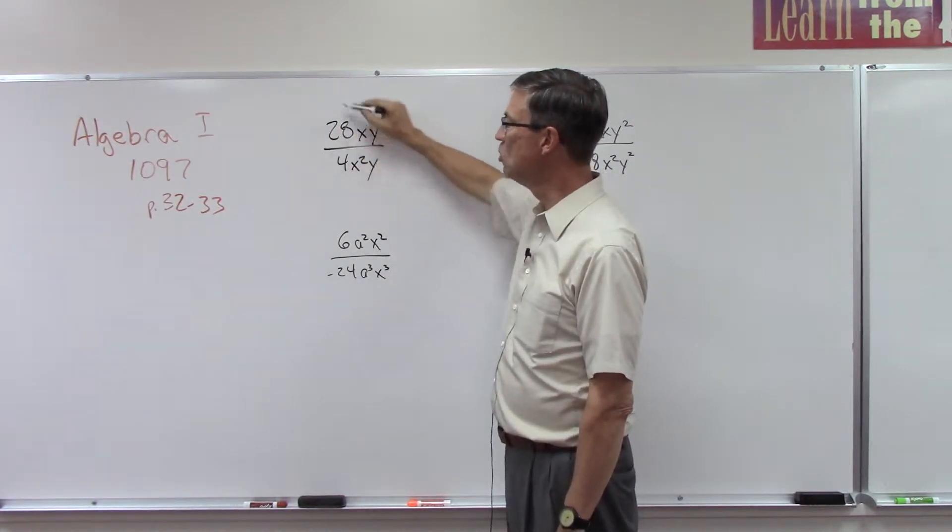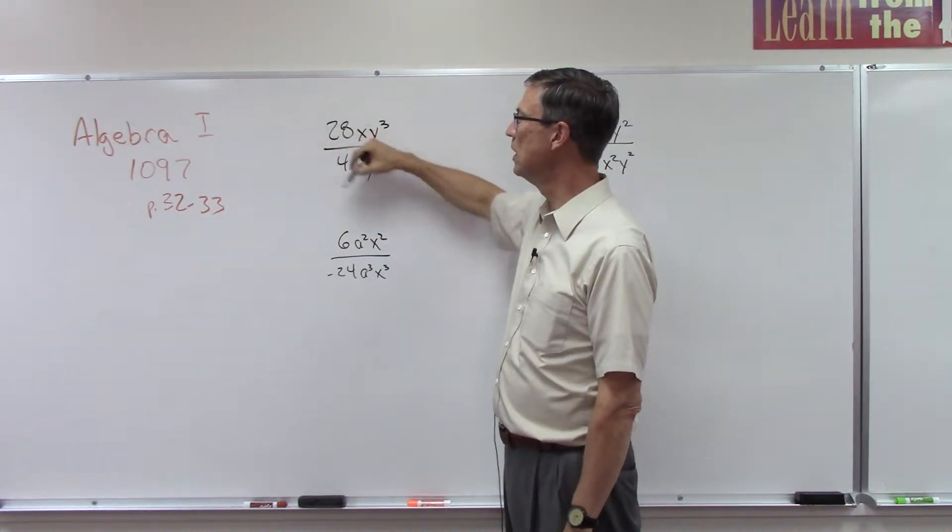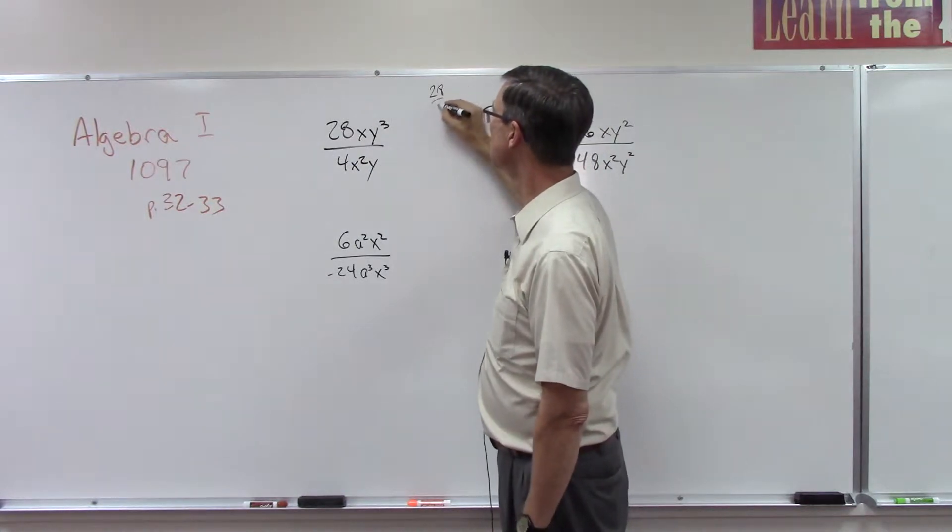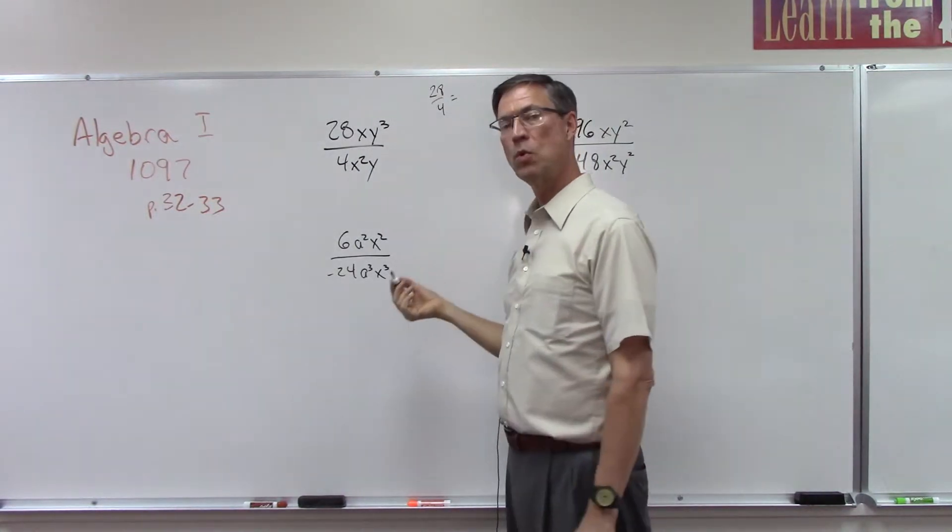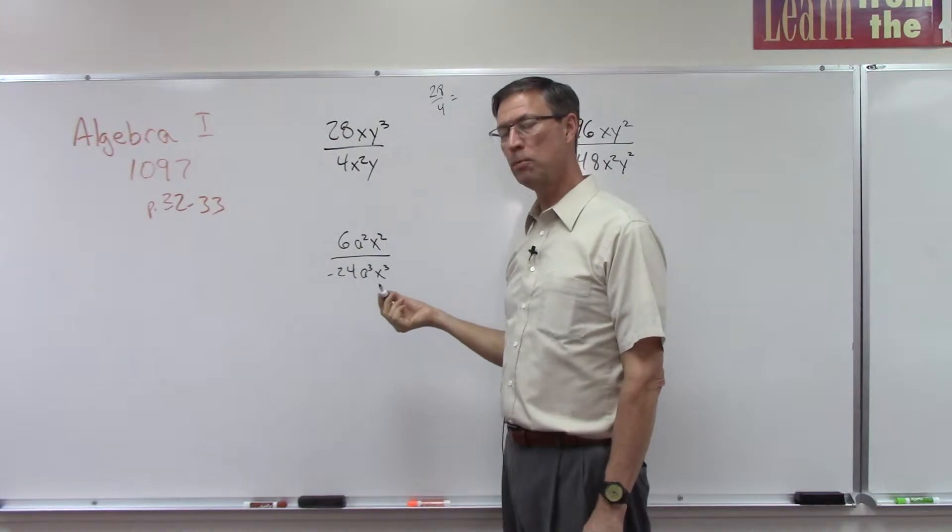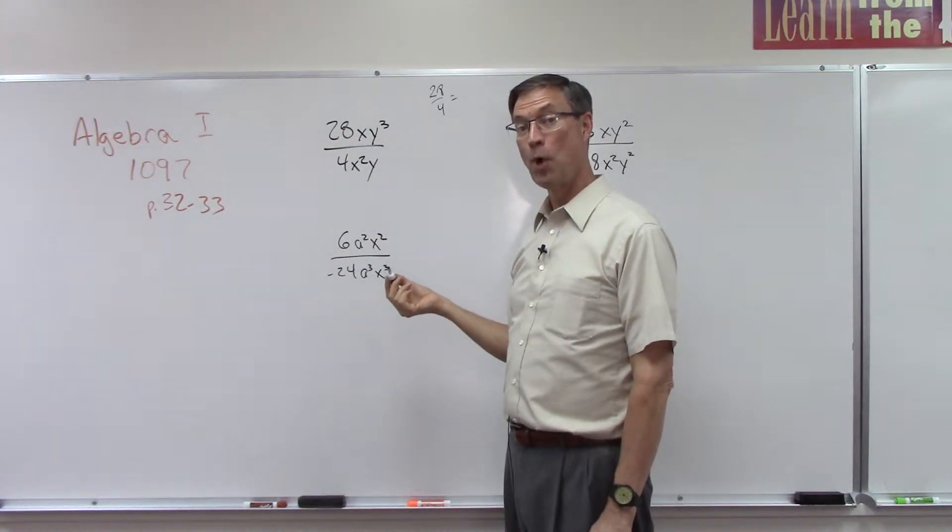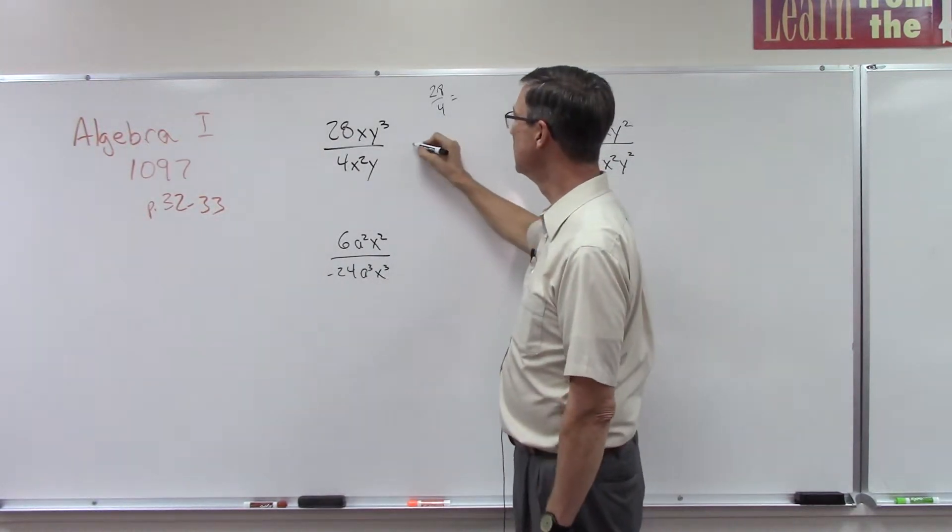First of all, let's do the easy part. Just take the numerical coefficients out front and simplify that. So what is 28 over 4? 28 divided by 4—hopefully you know your multiplication facts well by this time—that is 7.